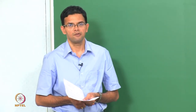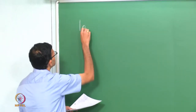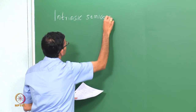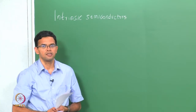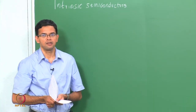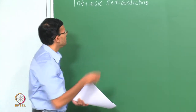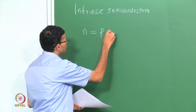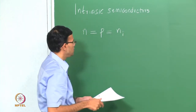Let us start with a brief recap of last class. We looked at intrinsic semiconductors, which are pure semiconductors, and we calculated the concentration of electrons in the conduction band and holes in the valence band. We found that at any given temperature, electrons and holes are created in pairs, and in an intrinsic semiconductor n equals p, equal to ni, the intrinsic carrier concentration.